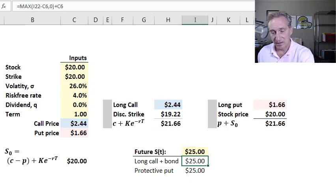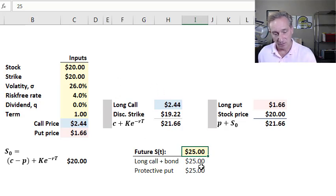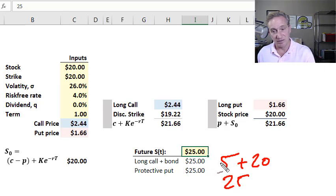Let's say the future stock price is $25. What's the payoff here on my call plus cash portfolio? If the future stock price is $25, my call with a strike of $20, I'll be able to exercise for a $5 gain, plus I'll have future cash of $20 in the form of the strike price. That's $25. My protective put: my long put at $25 will be worthless, but I'll have the stock at $25. So call plus cash will be worth $25, and my protective put will also be worth $25.